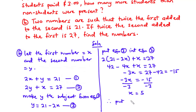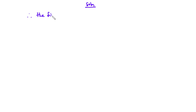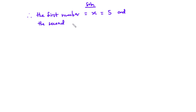Now putting X equals 5 into Equation 3: Y equals 21 minus 2 times 5. Two times 5 is 10, so 21 minus 10 is 11. Therefore, the first number represented by X is equal to 5, and the second number represented by Y is equal to 11.